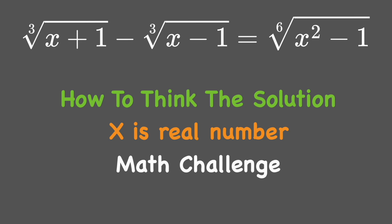For the problem today I will show you how to think when you see a radical equation and how you find the method to solve it. We have the radical equation with the 6th root of x plus one minus 6th root of x minus one equal to 6th root of x squared minus one.